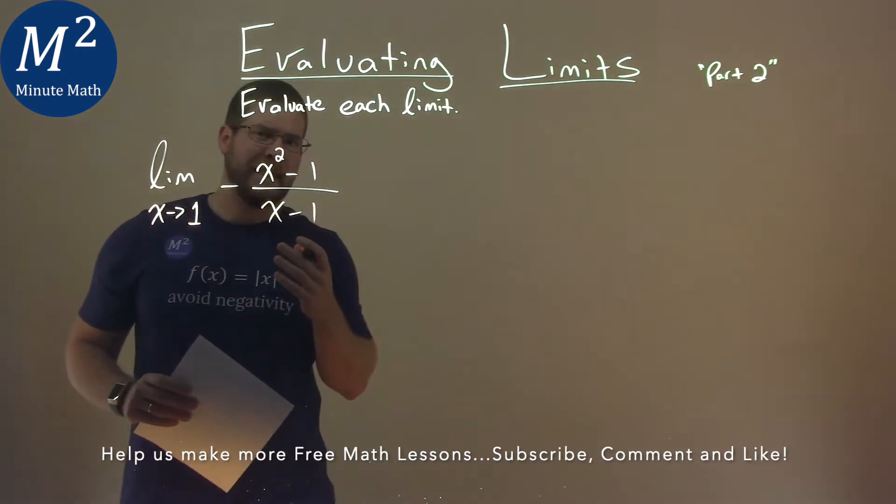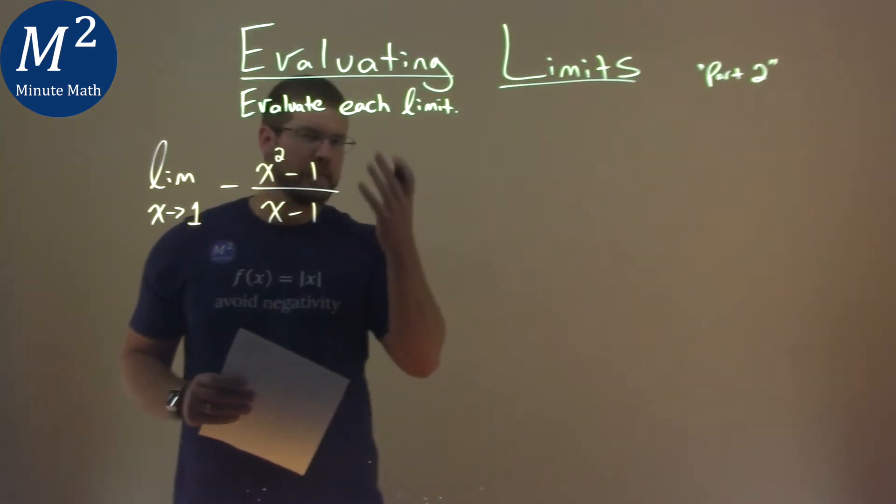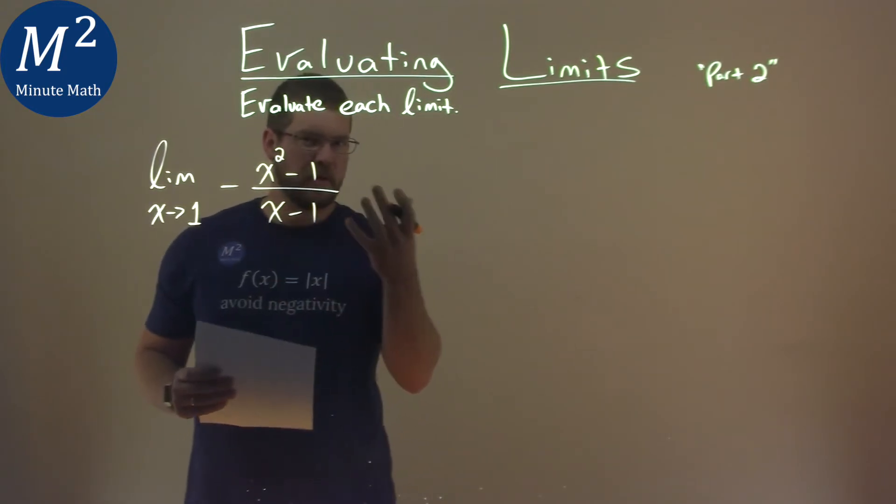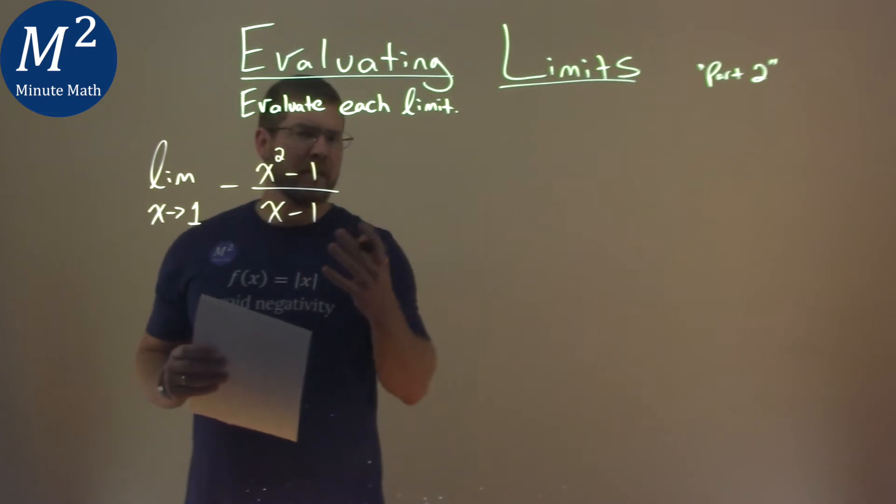When we see limits like this, right away we can't just plug in 1 for x because it'd be divided by 0. So with rational functions we're going to try to simplify this and a lot of it involves factoring.